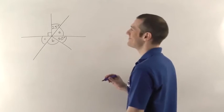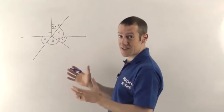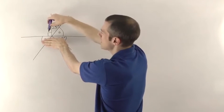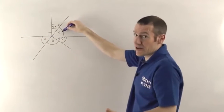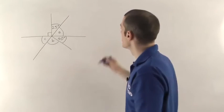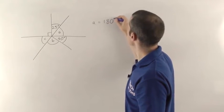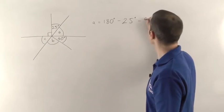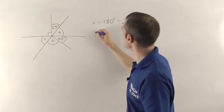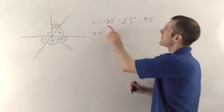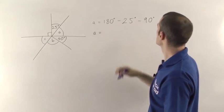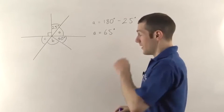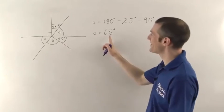Here's the solution. First, you must realize we know that's a 90-degree angle. So we can work out A because it sits on a straight line all the way along there. So 90 plus 25 plus A must add up to 180. So A is 180 minus 25 minus 90, which gives us 65 degrees.